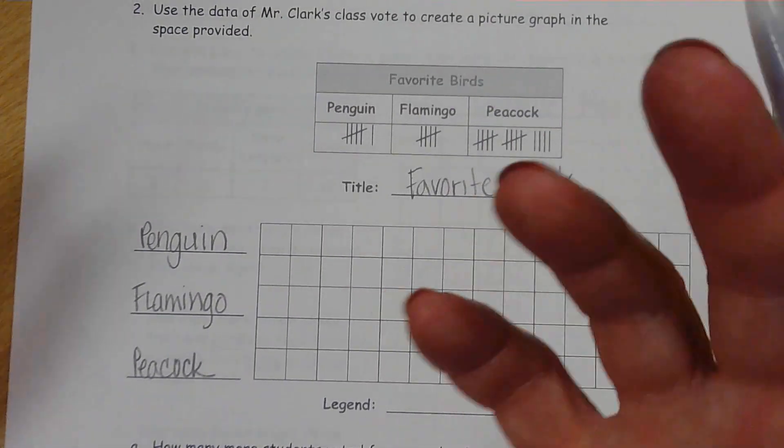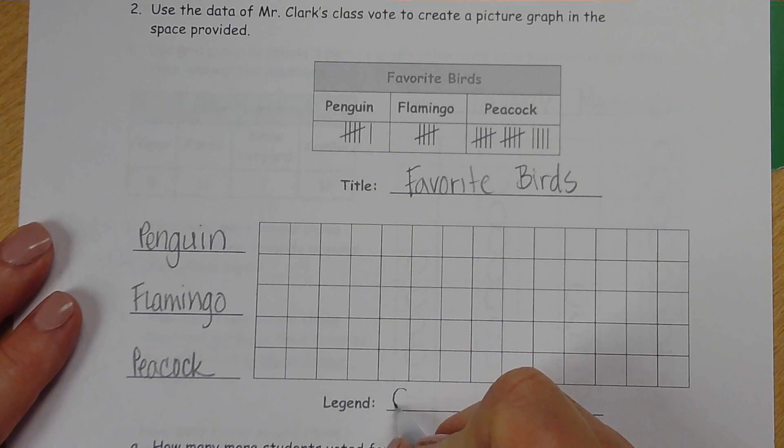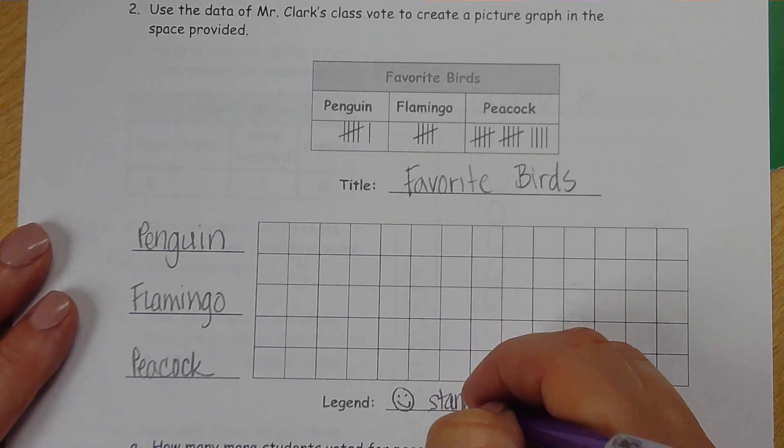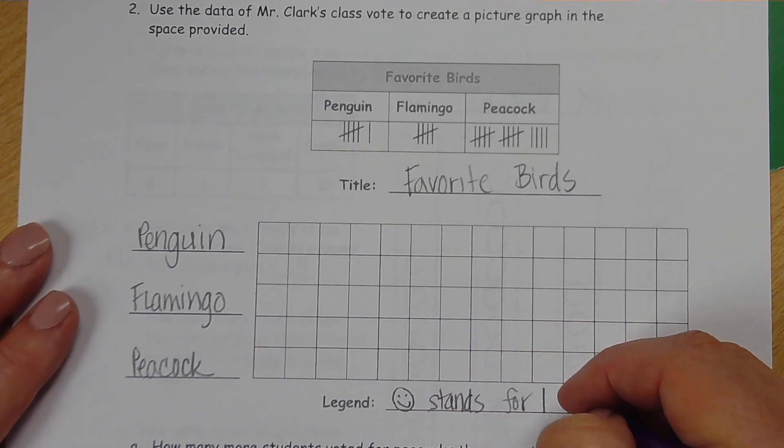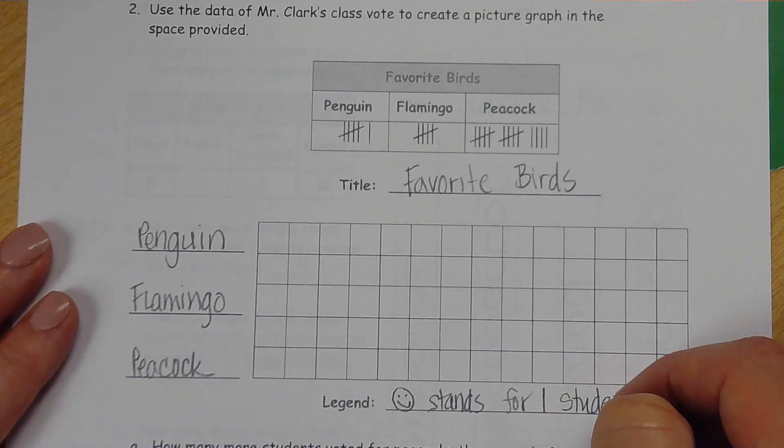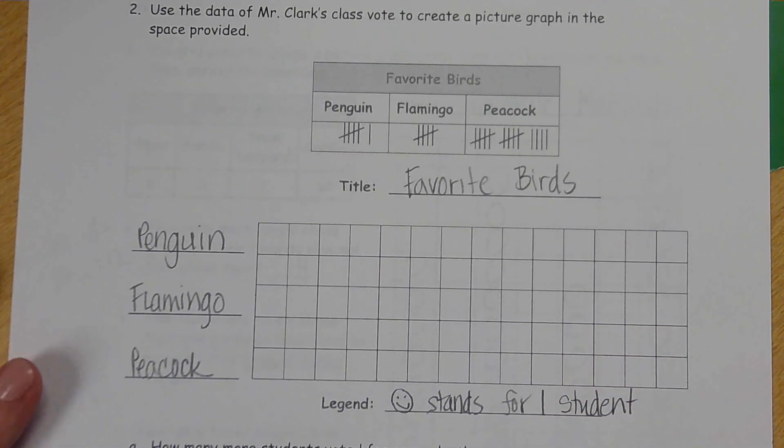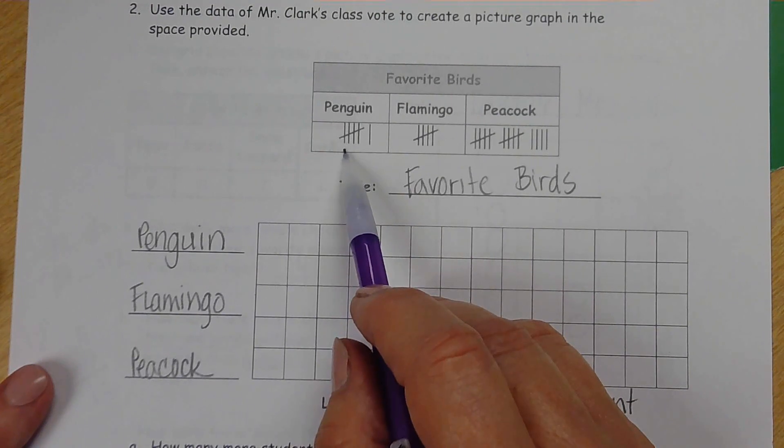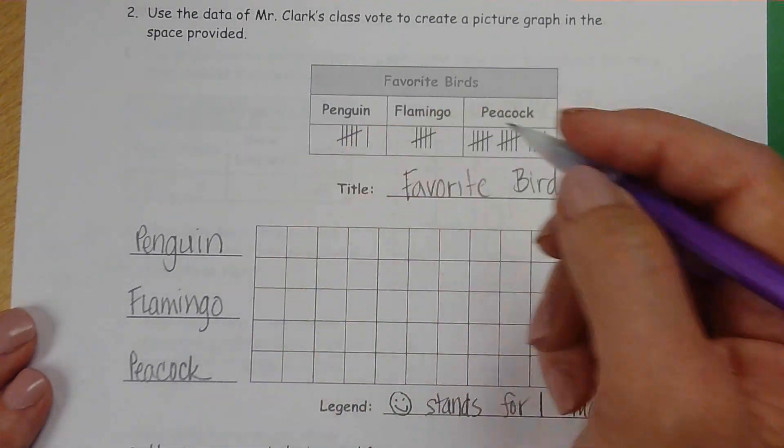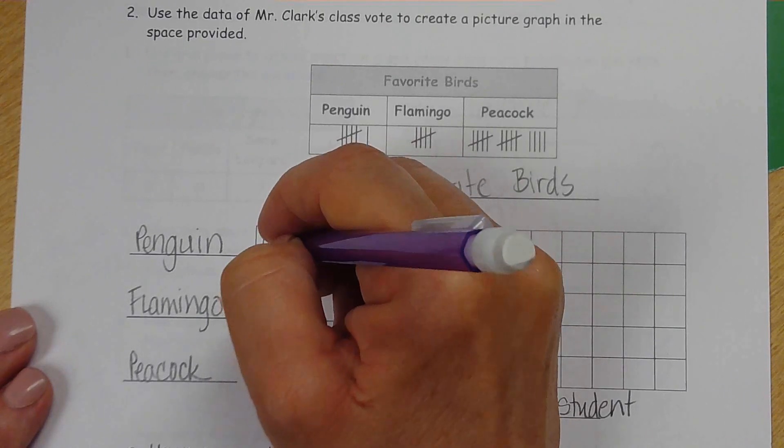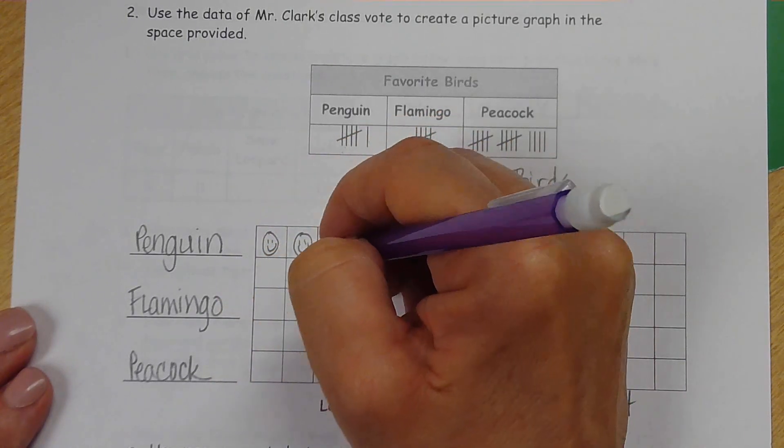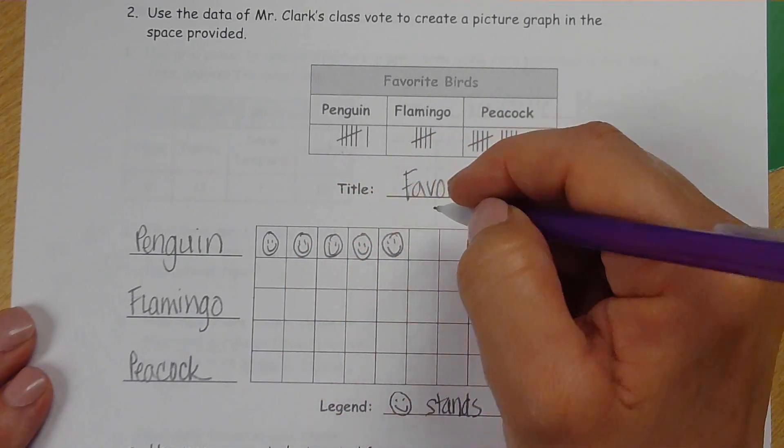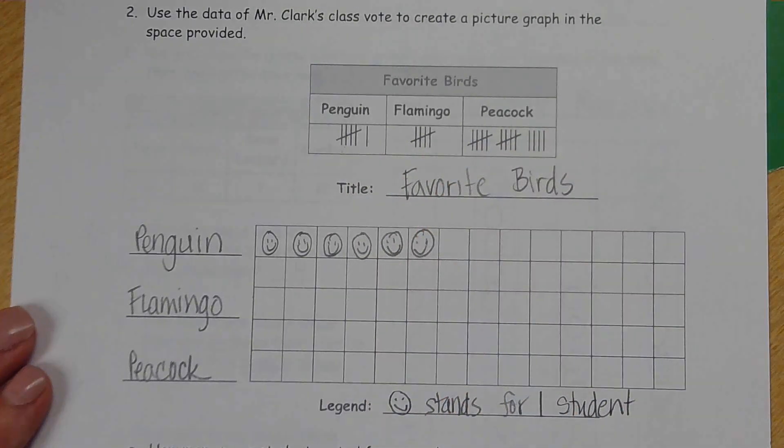These are how many students, right? So I'm going to say that I'm going to use a happy face. So a happy face stands for one student. One student likes that animal. Penguins: remember with our tally marks, when you have that slant across, that's a group of five. We have five and one more, so that's six. I'm just going to do six happy faces, people who liked penguins. Six people liked penguins.